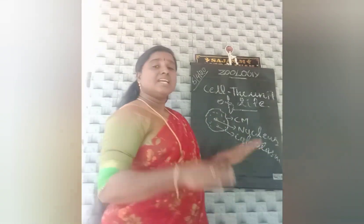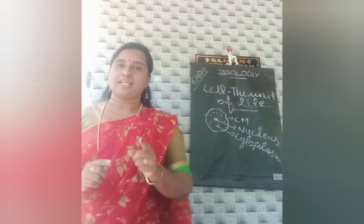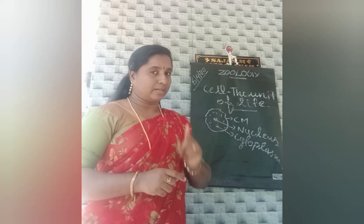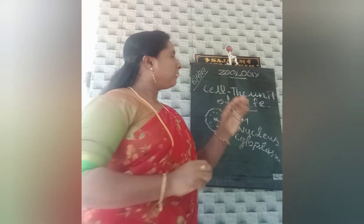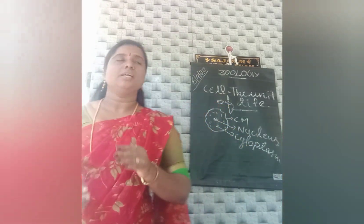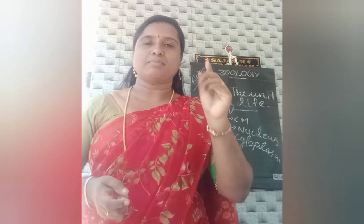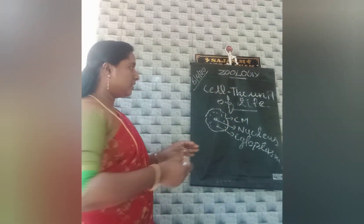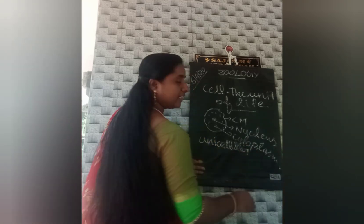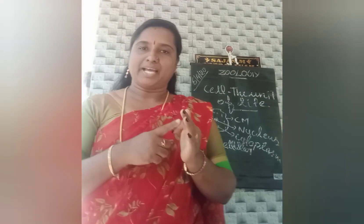A cell is the structural and functional unit of a living organism. Considering organisms, they are mainly divided into two types. An organism made up of only one cell is known as a unicellular organism.